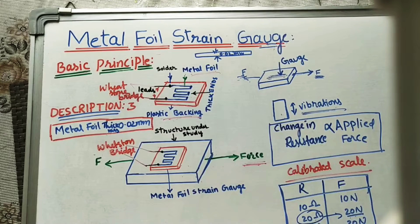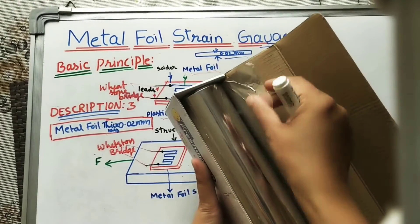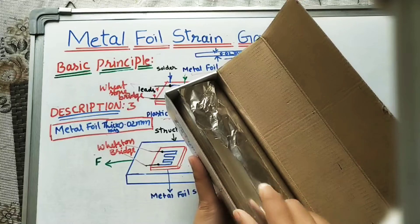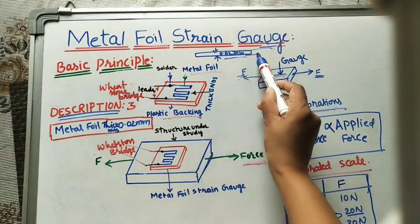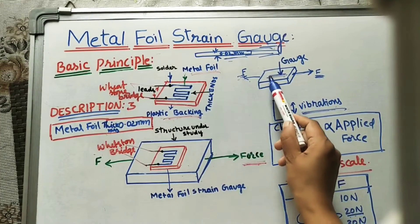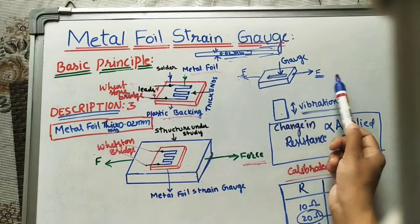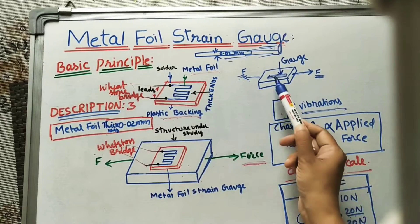We are calling it a metal foil strain gauge because we use a metal foil — the thickness of the metal foil is 0.02 mm. Just like aluminum foil, which is thin paper we call a foil, here also we take one metal foil of more length with a thickness of 0.02 mm. We stick this foil on the structure whose forces we have to find. Whenever we apply forces, it will be stretched — this foil is under strain.